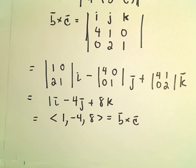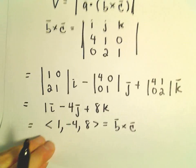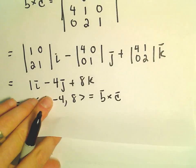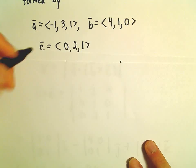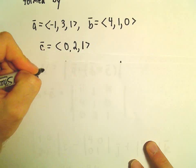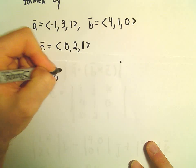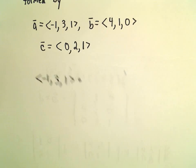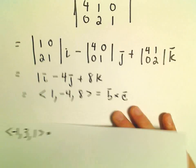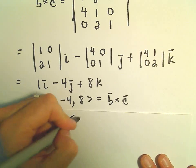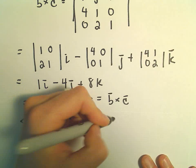What we have to do next is simply dot this with our vector a. Vector a has components <-1, 3, 1>. We're going to dot this with the cross product, which has components <1, -4, 8>.